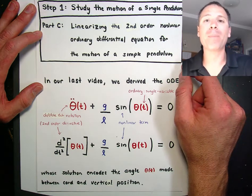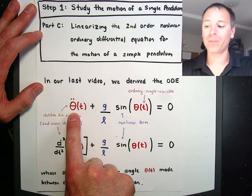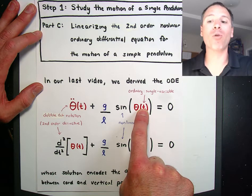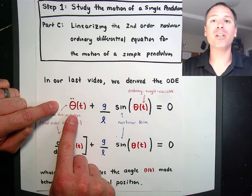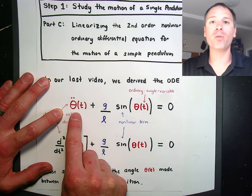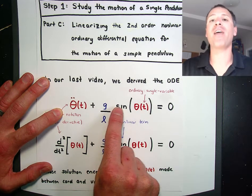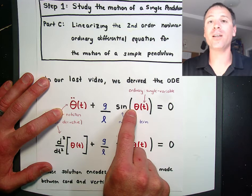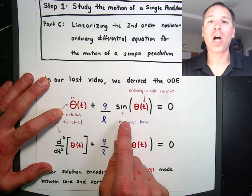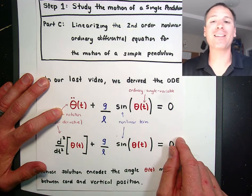Now we're going to talk about a very popular technique, which is linearizing this second order, nonlinear, ordinary differential equation to make it look a lot more beautiful. We said that the pendulum motion is governed by this famous equation: the second derivative of unknown theta, plus g divided by l times the sine of theta of t, is equal to zero. This was an expression of Newton's second law — go back to the last video for more on that.